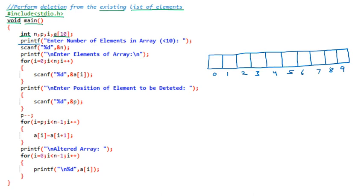printf prints a message: 'Enter number of elements in array less than 10.' On the user screen there is a message that you can store a number of elements less than or equal to 10. Then scanf with %d reads an integer into n — the number of elements the user wants. Let us suppose the user says they want to enter only five elements, so 5 is stored into n.